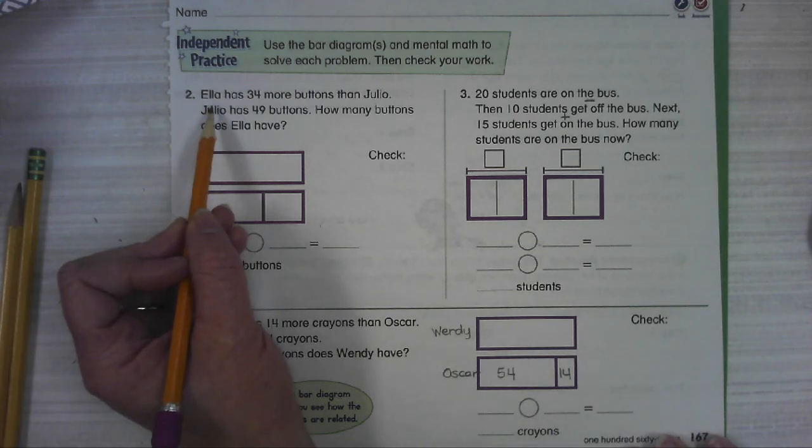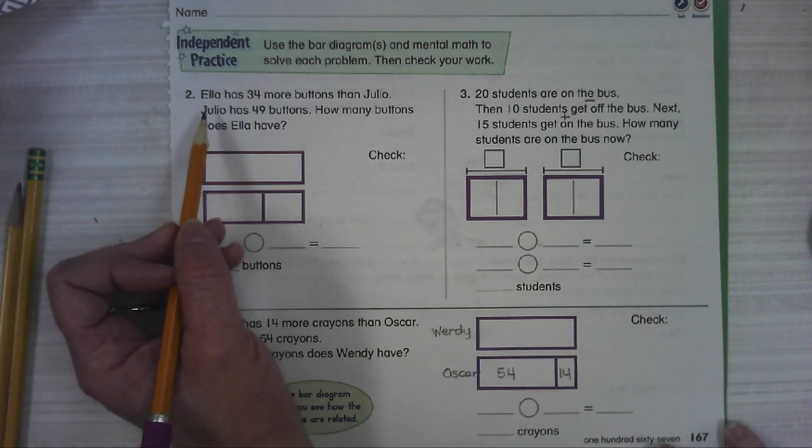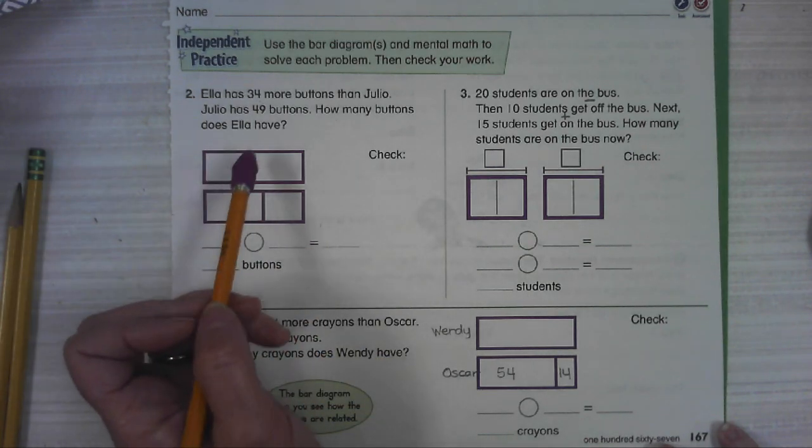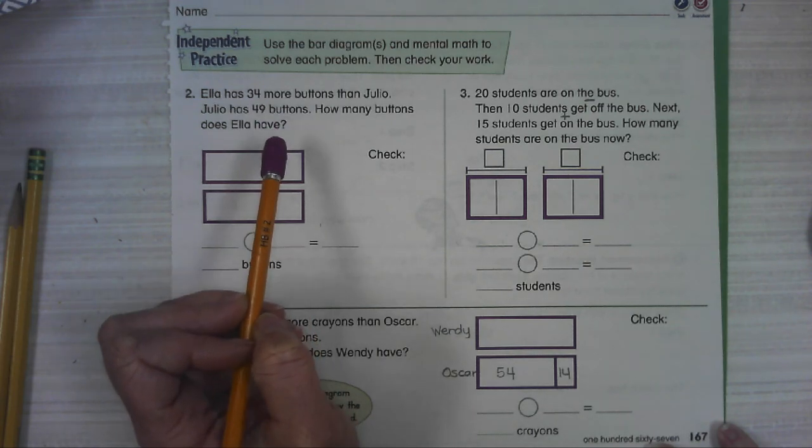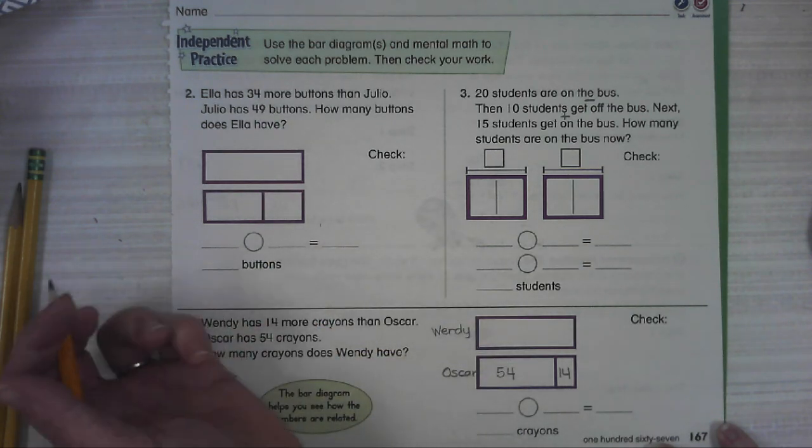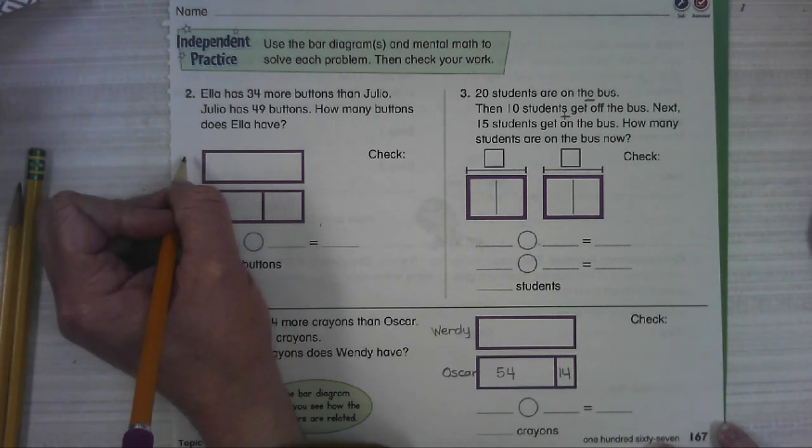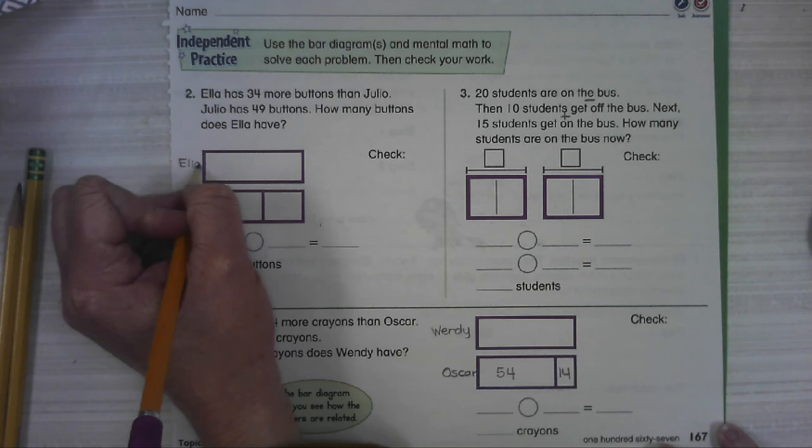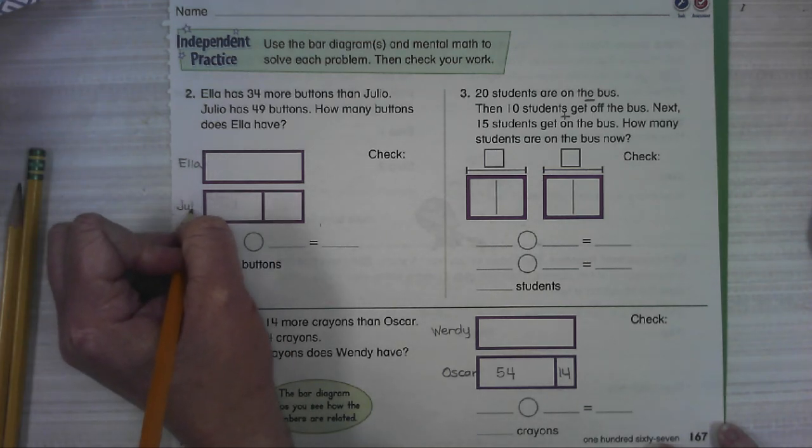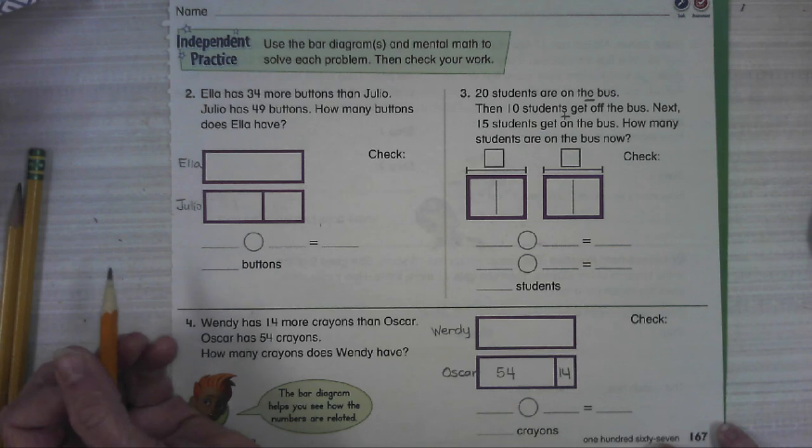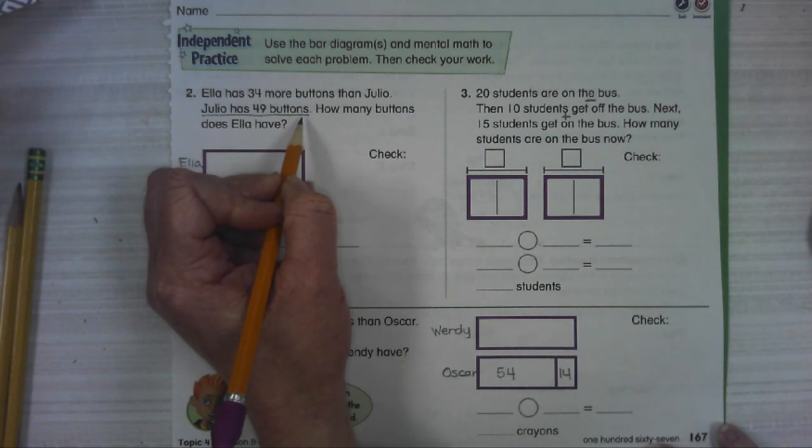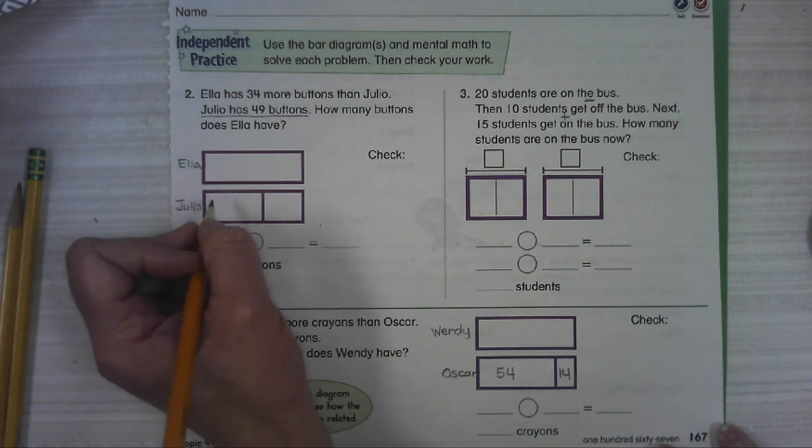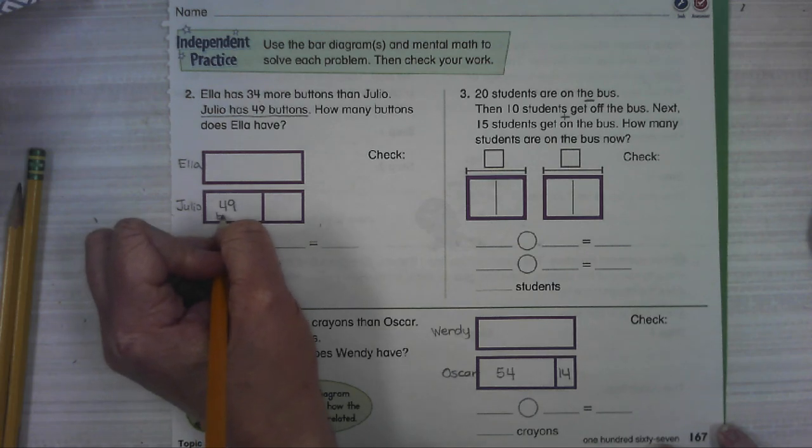All right, number two. Ella has, I'm going to cover up the number, Ella has more buttons than Julio. Julio has some buttons. How many buttons does Ella have? So Ella has more, this bar must be Ella's. Julio has got to have this one then. All right, Julio's got 49. I know that's not the first thing in the problem, but that's helpful. We know exactly how many Julio has. Julio's got 49 buttons. I'm going to write that so we remember what we're talking about.